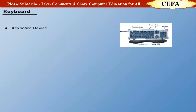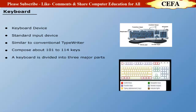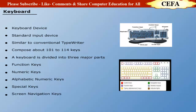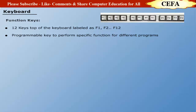Keyboard device: A keyboard is a standard input device readily available to feed data. It is similar to a conventional typewriter with about 101 to 114 keys. A keyboard is divided into three major parts: function keys, numeric keys, alphabetic numeric keys, special keys, and screen navigation keys. Function keys are 12 in number, labeled F1 to F12. They are programmable keys to perform a specific stored function. For example, F1 key is used for the help option.